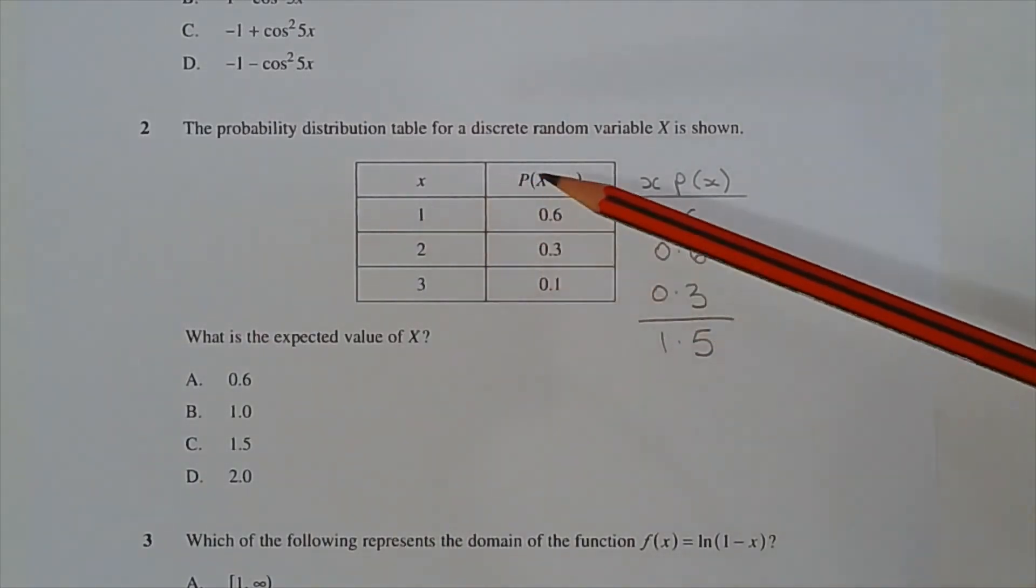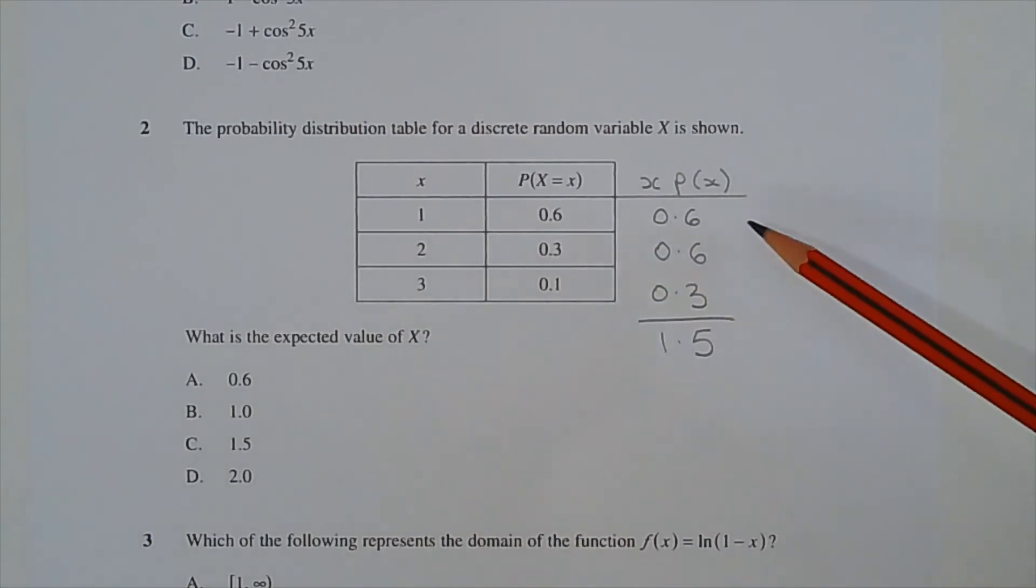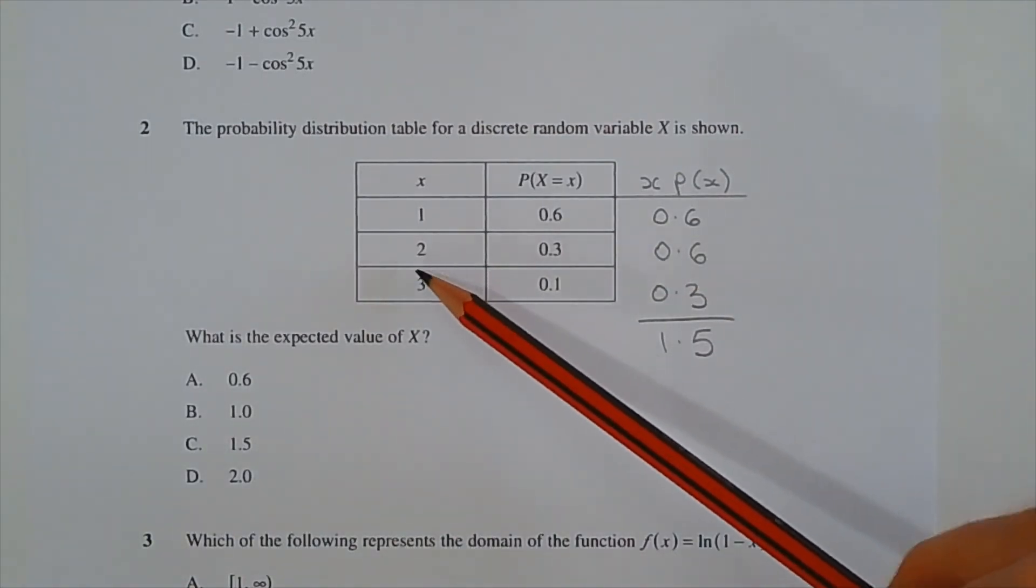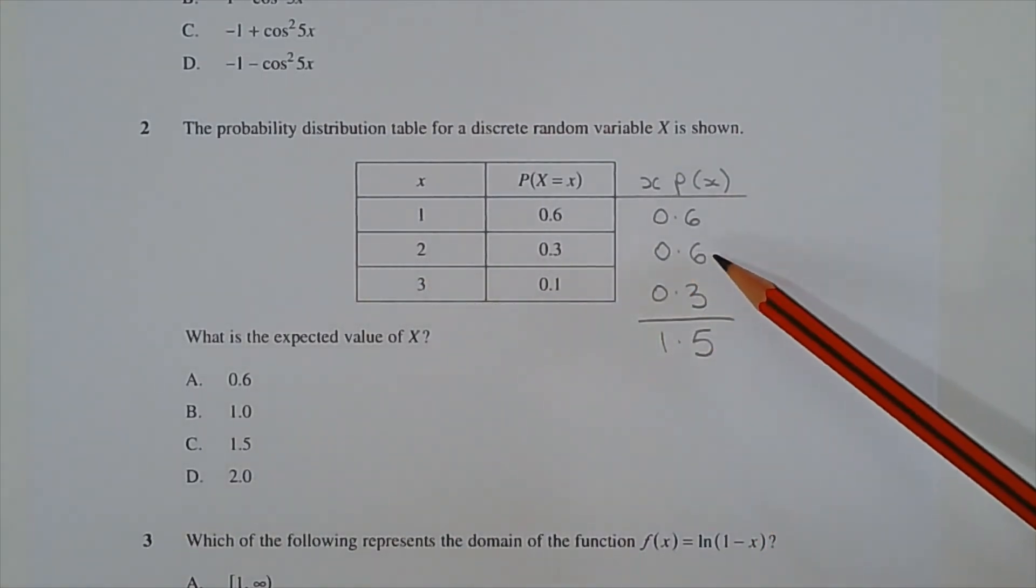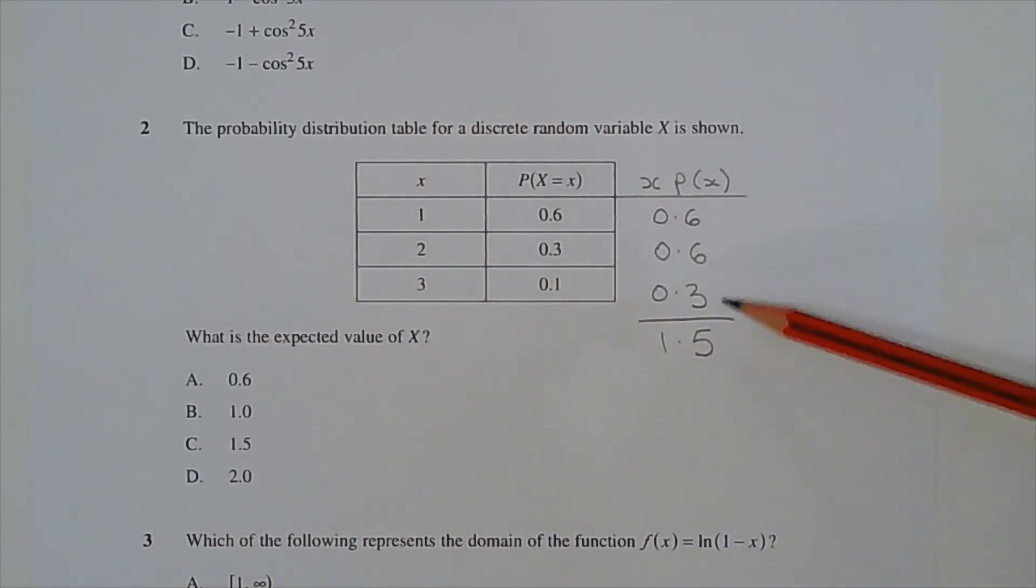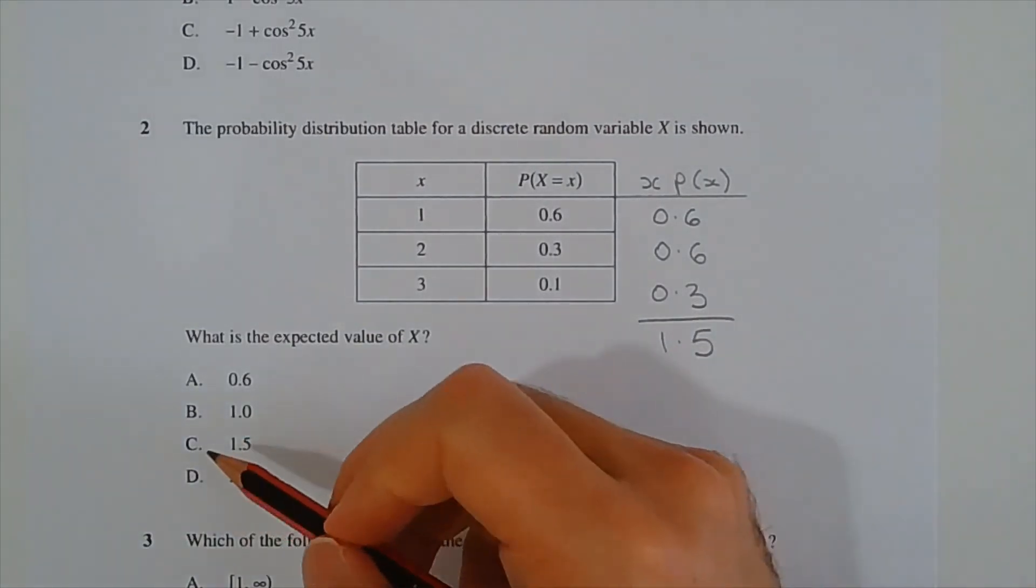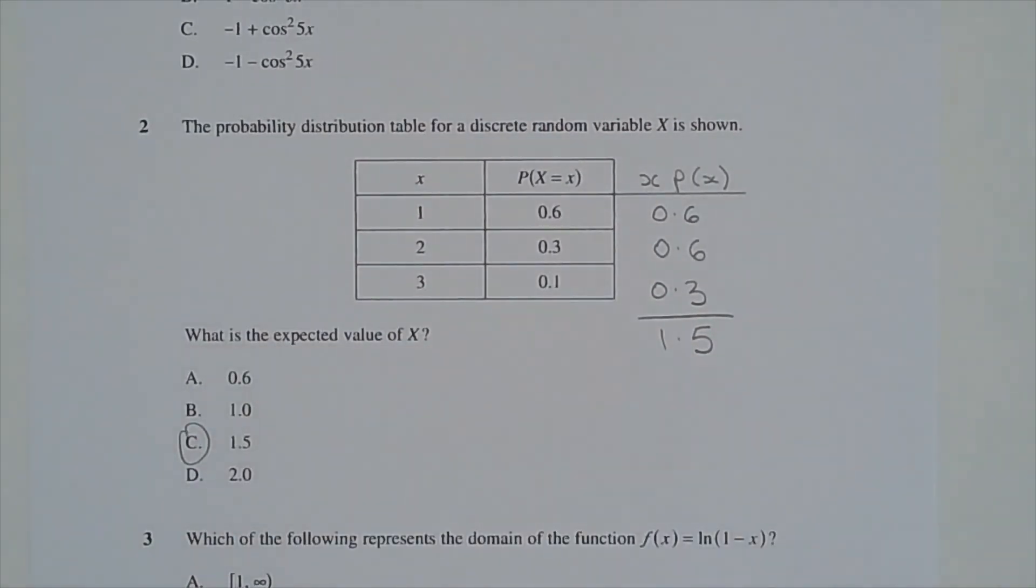We take the score and multiply it by the probability of that score occurring. So 1 multiplied by 0.6 is 0.6. 2 multiplied by 0.3 is equal to 0.6. And 3 multiplied by 0.1 is 0.3. Then we take the sum of that column, and that's equal to 1.5. Therefore, the answer is option C.